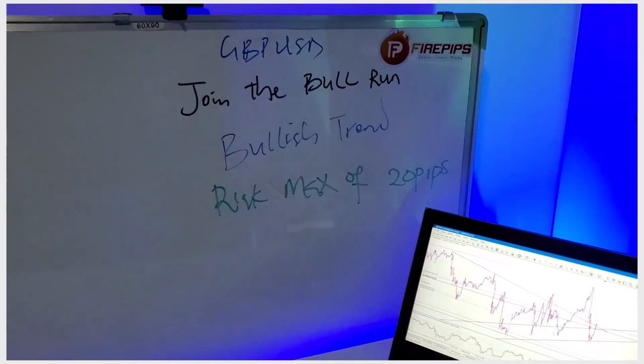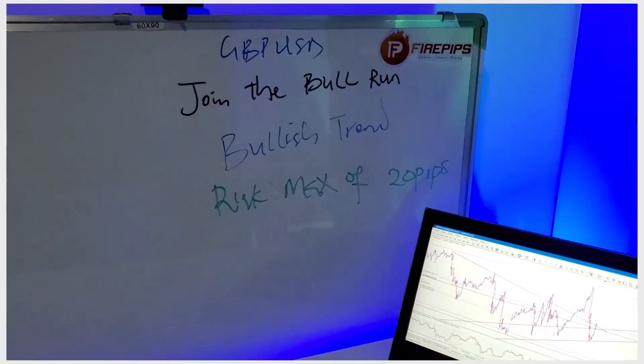The first thing I look for when looking for a sniper entry is I have to check the main trend. For this week we are on a bullish trend on GBPUSD, which gave me the idea to hold my bull runs. You can check on my board — GBPUSD, you have to join the bull run; it's a bullish trend with a risk mark of 20 pips.